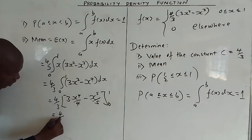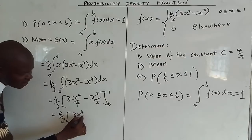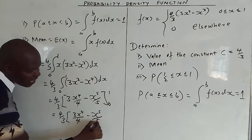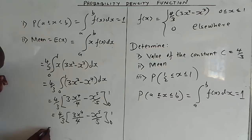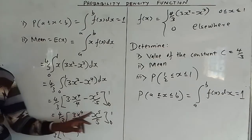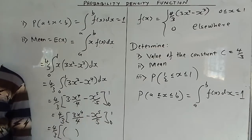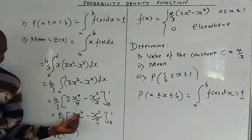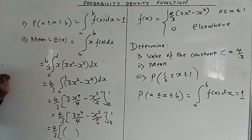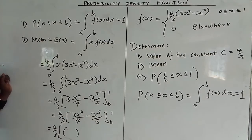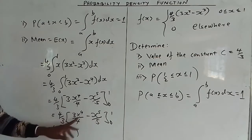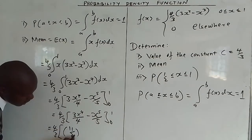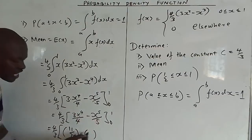Evaluating at the upper limit x = 1: 1 raised to power 4 is 1, and 1 raised to power 5 is 1. So we get 3/4 - 1/5 = 15/20 - 4/20 = 11/20. For the lower limit x = 0, substituting gives 0 - 0 = 0.